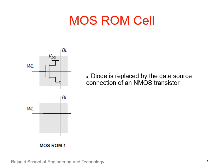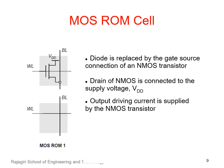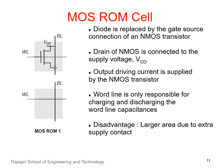To overcome this disadvantage, the diode is replaced by the gate-source connection of an NMOS transistor. The drain of the NMOS transistor is connected to the supply voltage VDD. So when the transistor is turned on by giving a 1 to the word line, the bit line is also pulled up to VDD. For this ROM cell, the current for charging the bit lines is supplied from VDD by the NMOS transistor. The word line is responsible for charging and discharging the word line capacitances alone. The disadvantage of this ROM cell is the larger area required for extra supply contacts.